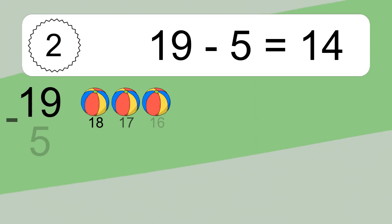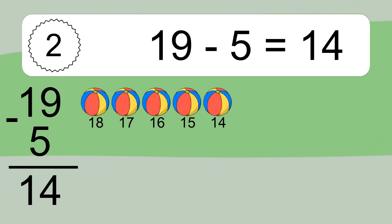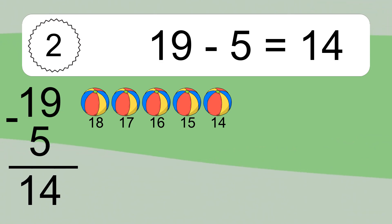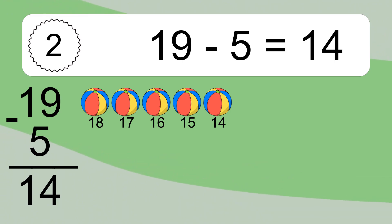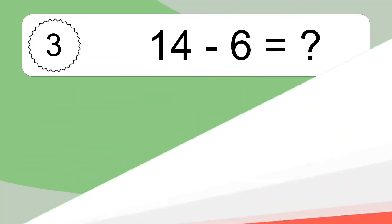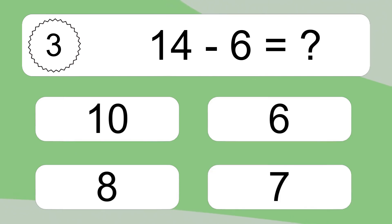19 minus 5 equals what? 19 minus 5 equals 14. Let's count it: 18, 17, 16, 15, 14.